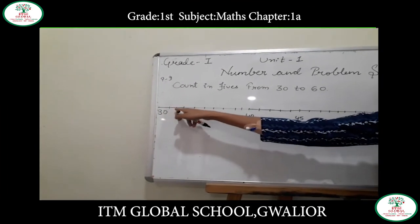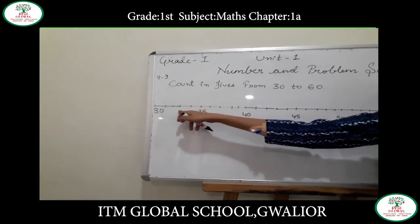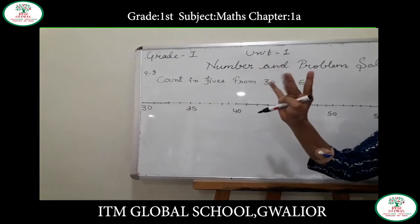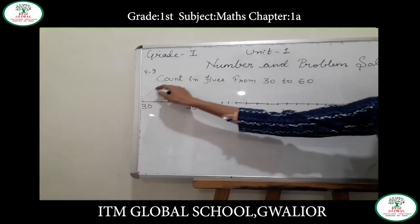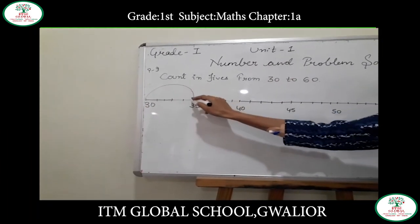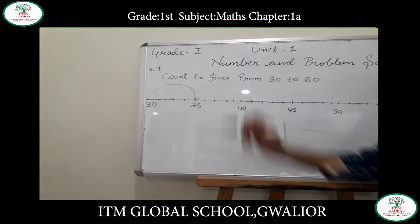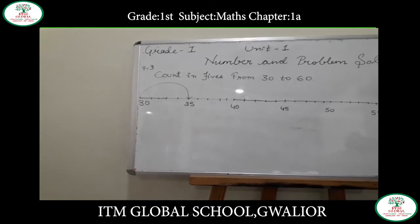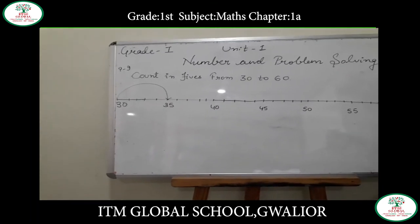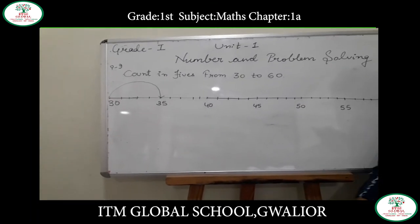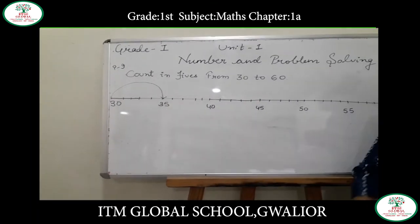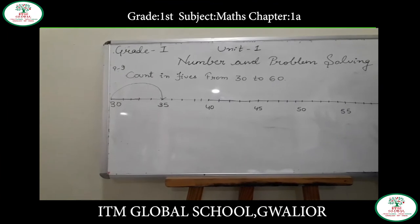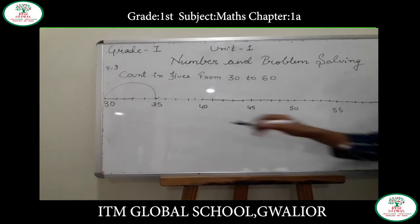For example, after 30: 31, 32, 33, 34 — those are 4 numbers. Then after those 4 numbers, the 5th will be 35. So skip 4 numbers and remember the number that comes on the 5th position.